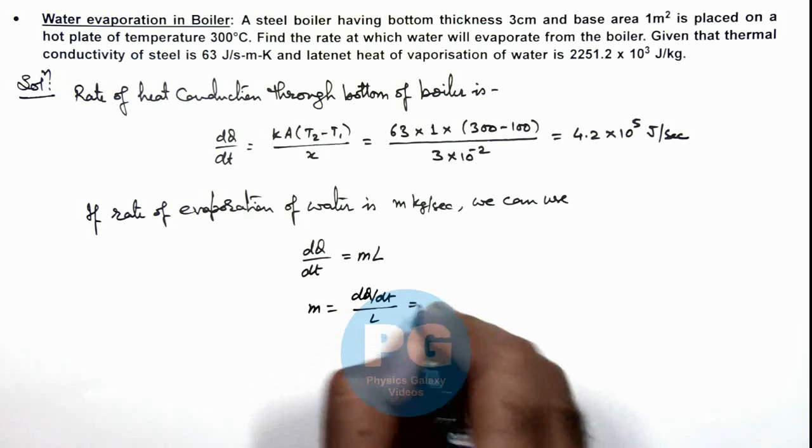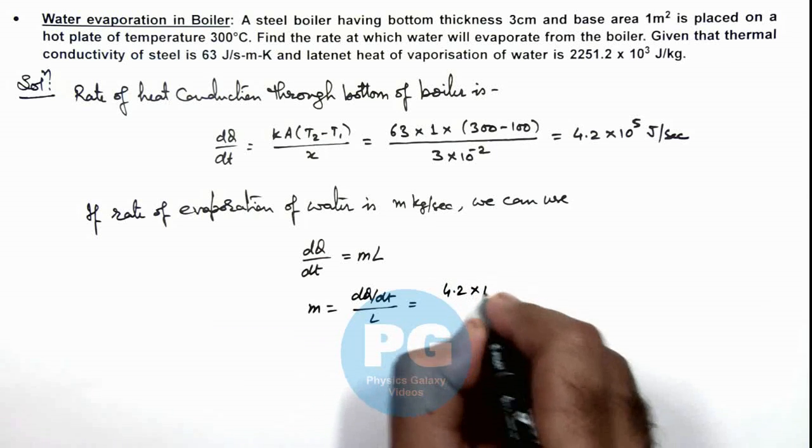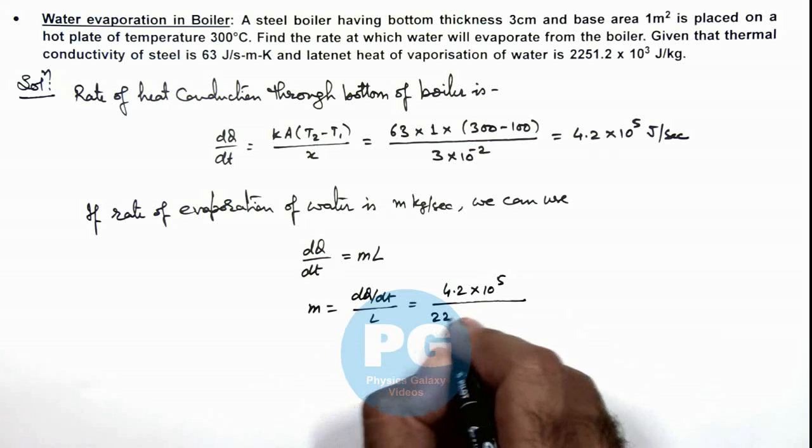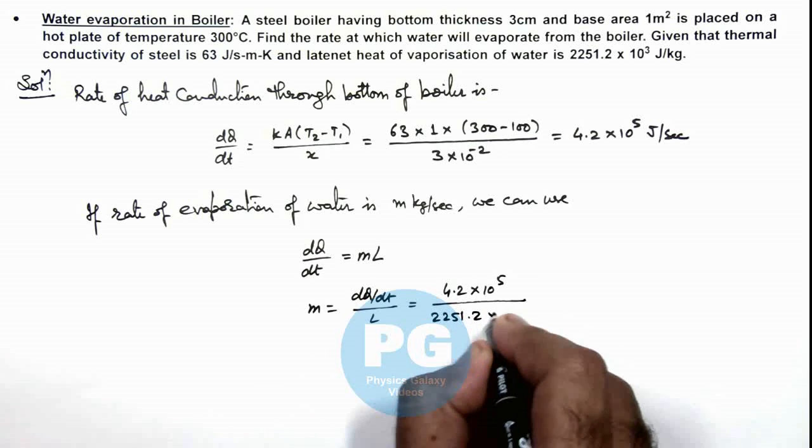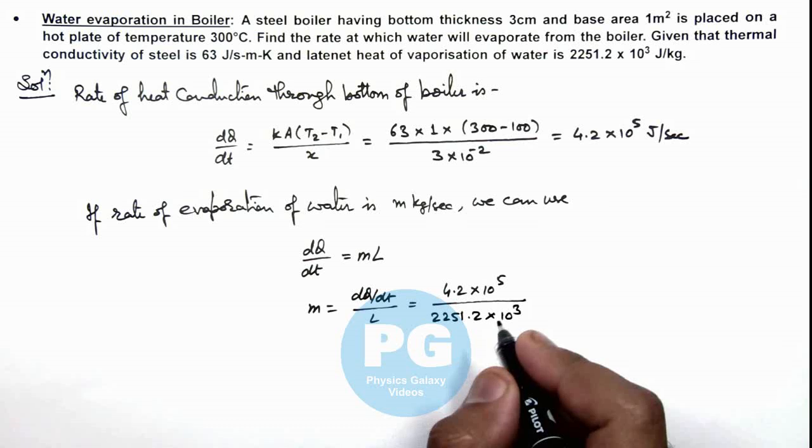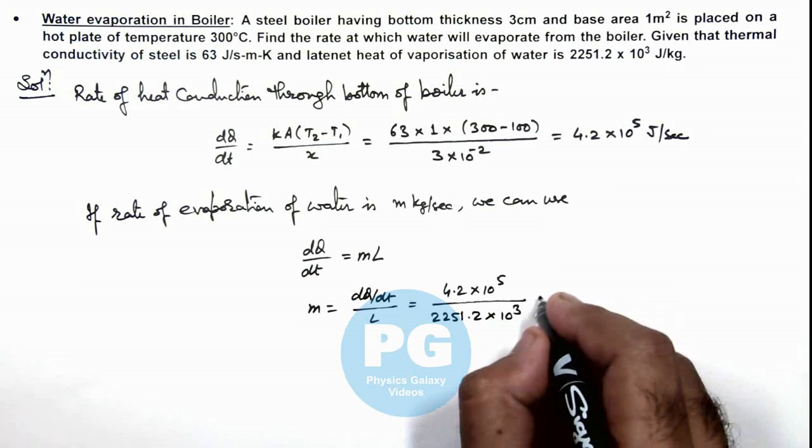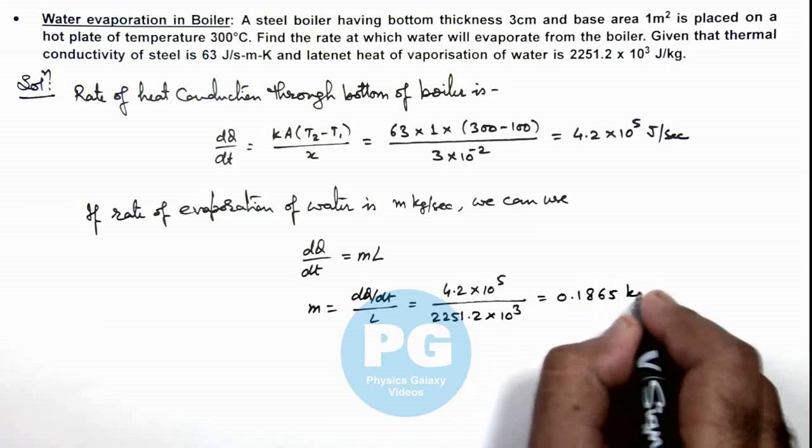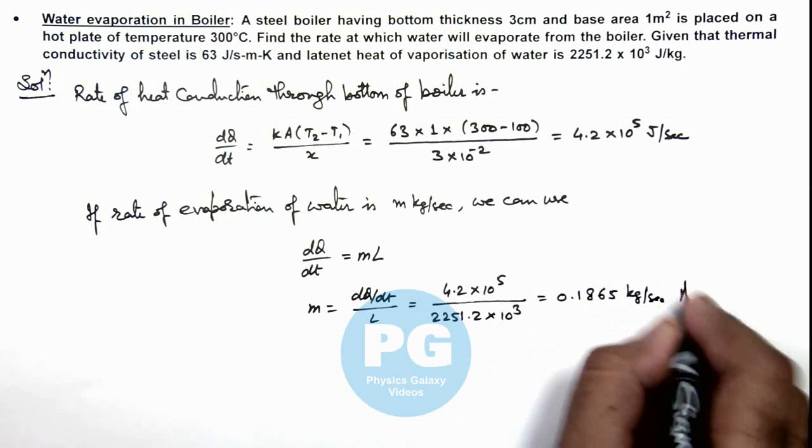So this is giving us 4.2 into 10 to power 5 divided by the latent heat of vaporization is 2251.2 into 10 to power 3. On further simplifying this will give us 0.1865 kilograms per second. That is the result of this problem.